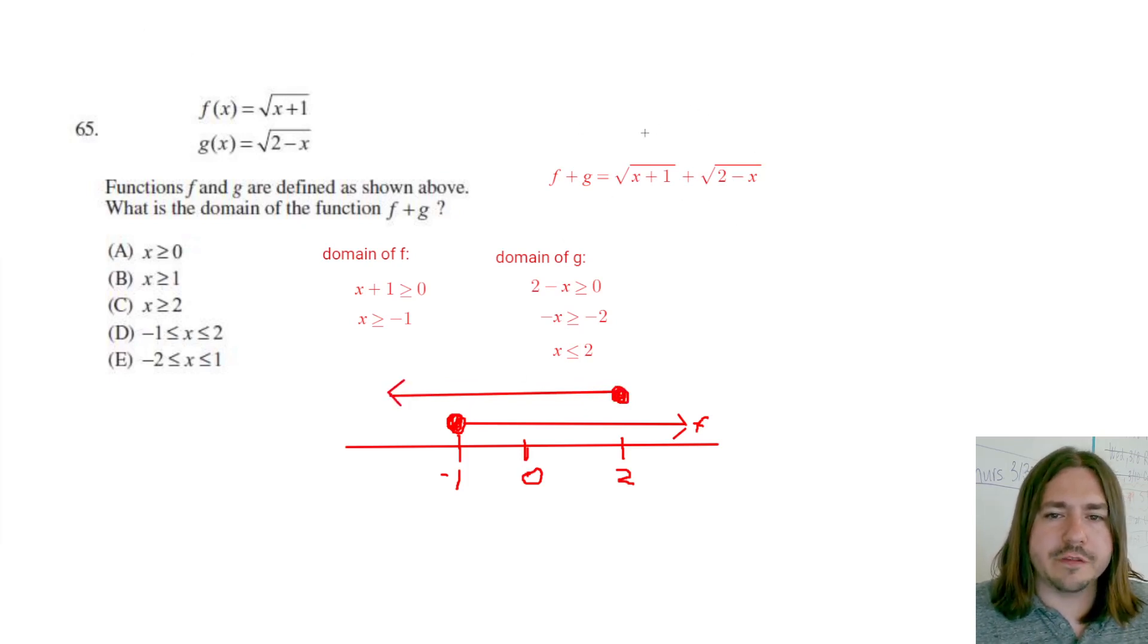Now the domain of this combined function, basically all the x values have to create a real number, whether it's in this one or this one. So what you're looking for here is the overlap of these two inequalities.